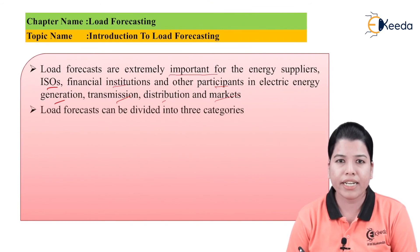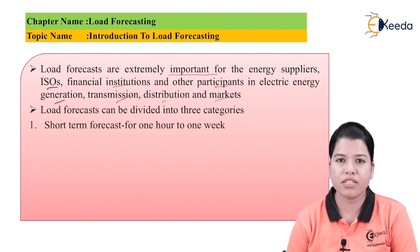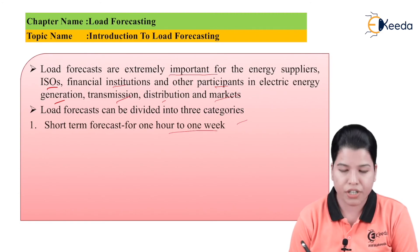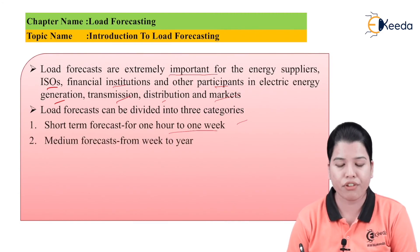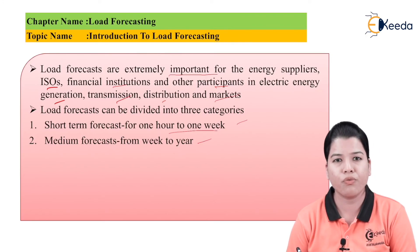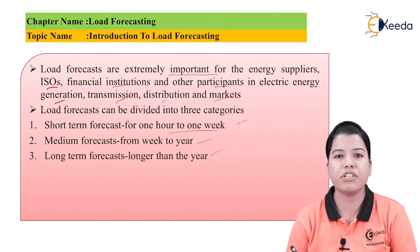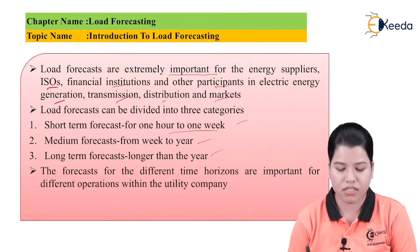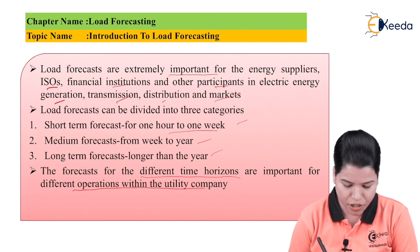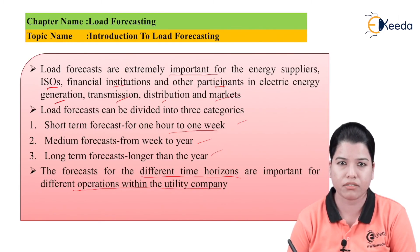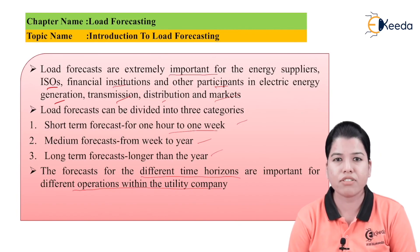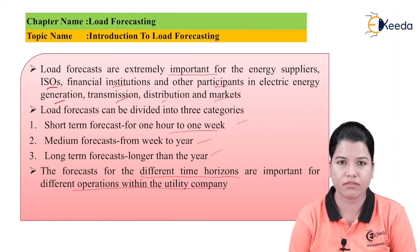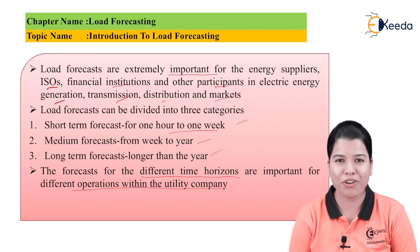Load forecast can be divided into three categories: first is short-term forecast which is for around one hour to one week; next is medium-term forecast which has a duration from one week to one year; and third is long-term forecast which has a duration of more than one year. Depending upon the available data, the forecasting can be done. The forecasts for different time horizons are also important for different operations within the utility company. In this way we have studied the introduction to load forecasting.